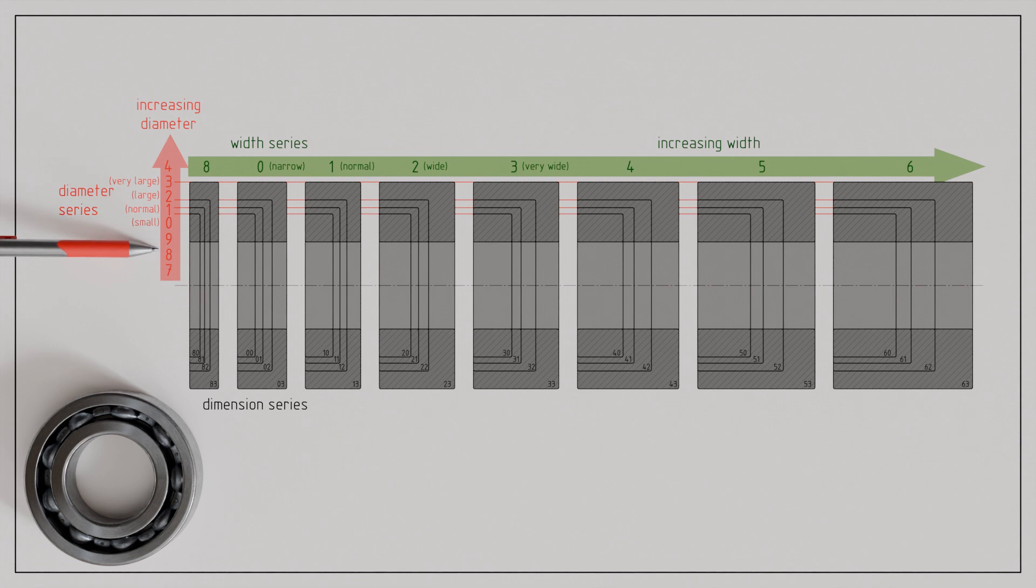Due to these subsequent extensions of the width and diameter series, only for common bearings with width series from 0 to 6 and diameter series from 0 to 4 does a consistent numerical ascending order exist. It is important to note that this designation system basically applies only to radial bearings.